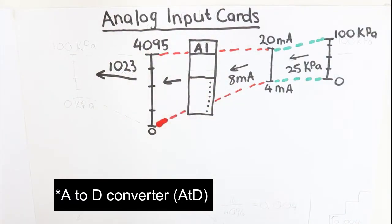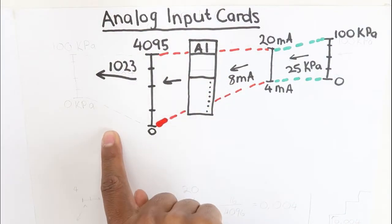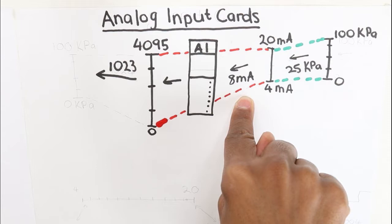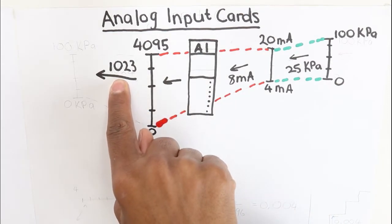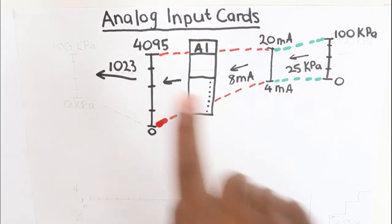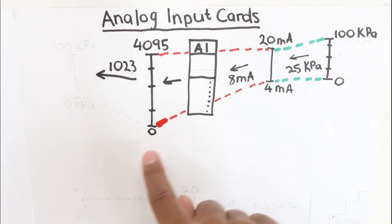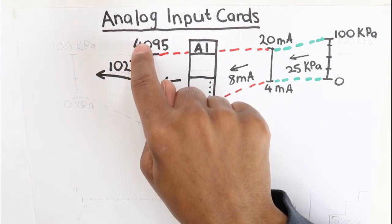So now let's go back to our example. Now that we get the value of 8 milliamps coming in from our transmitter, it means that the value that will be registered in the card will be 1023, because the 4 to 20 milliamp signal is now mapped between 0 to 4095.